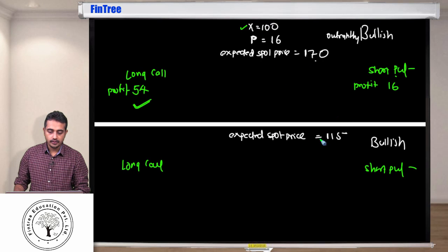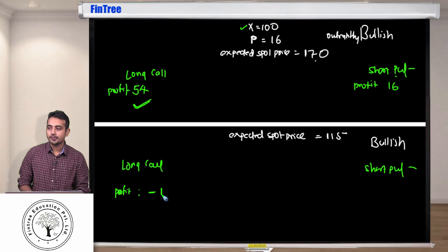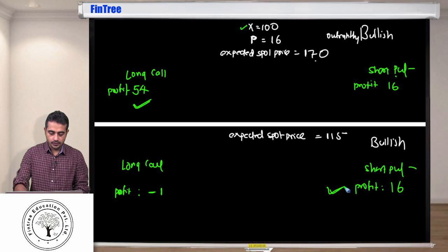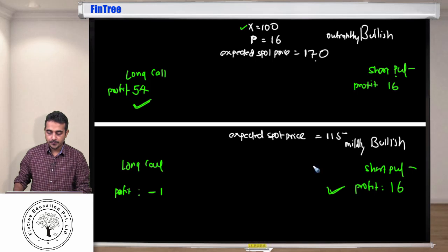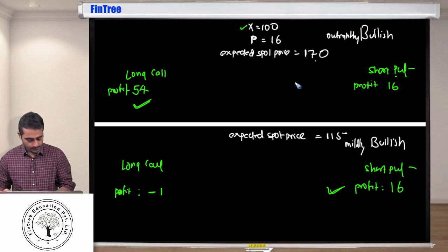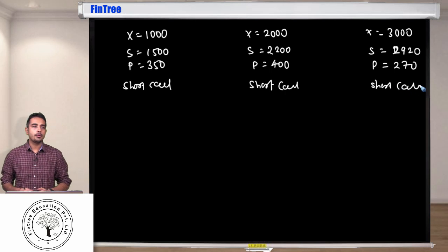In scenario two (mildly bullish, expected spot 115): for long call, right to buy at 100, price in market 115, you buy. Payoff is 15, but premium paid was 16, so net profit is minus 1 — a loss. For short put, the other party won't exercise, so your profit is the full premium of 16. You prefer short put. When you are mildly bullish, use short put; when significantly bullish, use long call. What defines 'significant' depends on the premium relative to the distance between strike and expected spot.